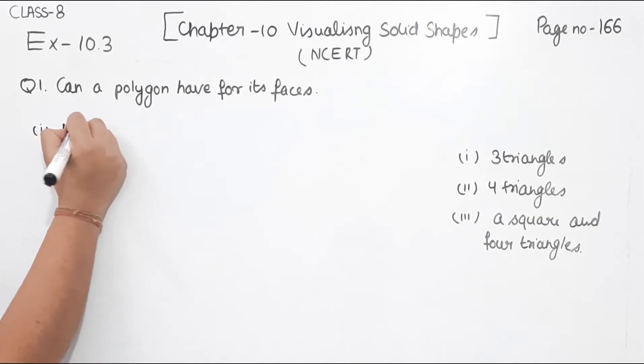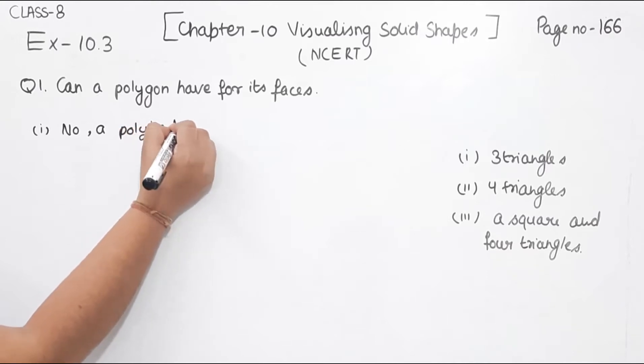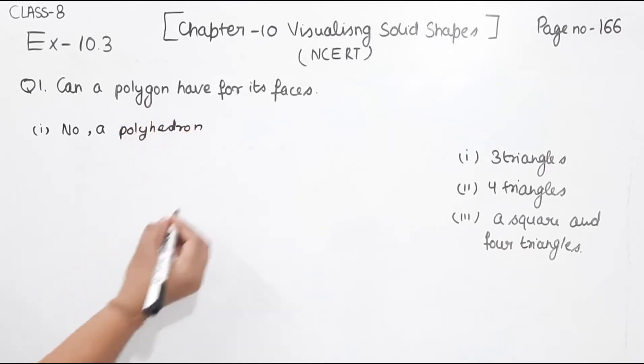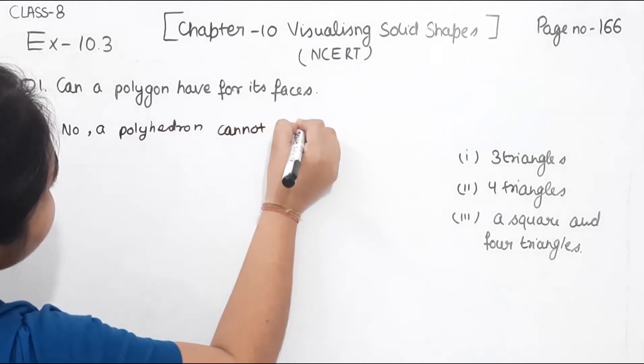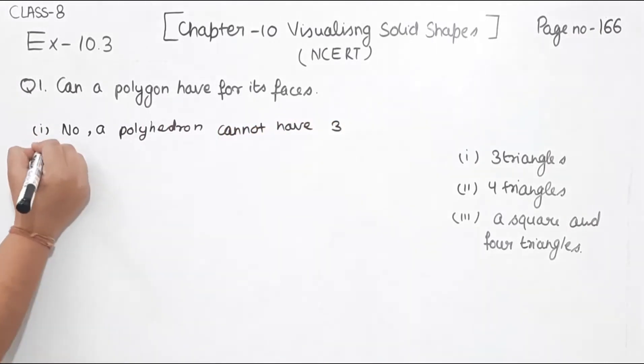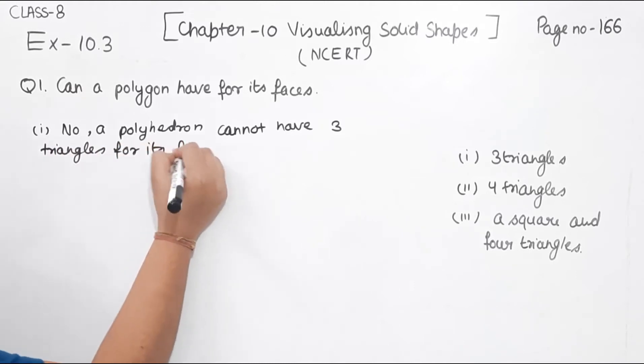No, a polyhedron cannot have three triangles for its faces.